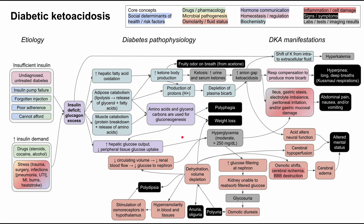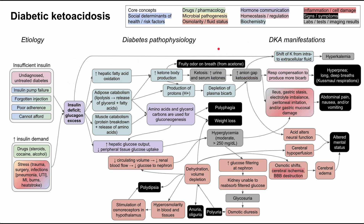This is a mechanism of disease map for diabetic ketoacidosis, also called DKA for short. I'll be talking about the etiology of DKA, some of the diabetes pathophysiology common to both uncomplicated diabetes and DKA, and some of the DKA-specific manifestations. Those three categories will flow from left to right across this flowchart. The core concepts are color-coded according to the legend, and each box will correspond to at least one of these core concepts.